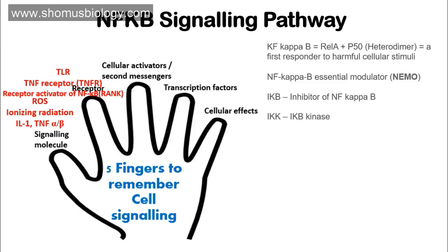The third important parameter covers cellular activators and second messengers involved in NF-kappa B signaling. The key examples are IKK, IKB, and NF-kappa B itself. NF-kappa B is a heterodimer composed of two different proteins: REL-A and P50. Because they are different, we call them a heterodimer. NF-kappa B also contains an inhibitor of NF-kappa B — that is IKB — and there is another protein, IKK, known as IKB kinase, which phosphorylates the inhibitor of NF-kappa B. All of these act as cellular activators.